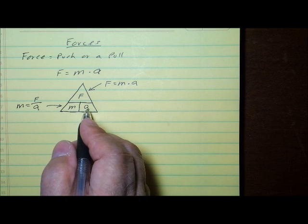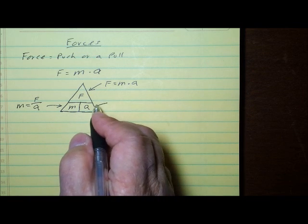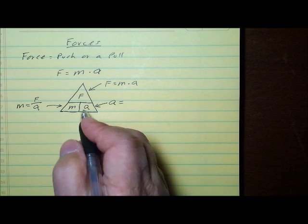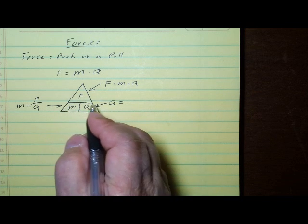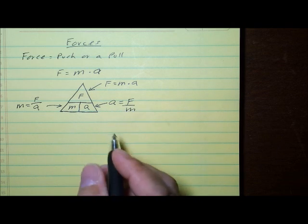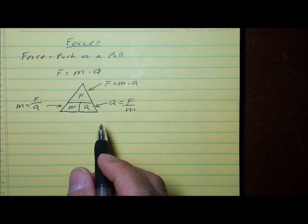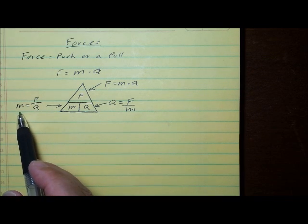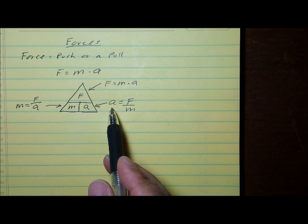And if we want to solve for acceleration, acceleration is equal to force divided by mass. So there are three ways that we can use the force equation. We can solve for force. We can solve for mass. We can solve for acceleration.